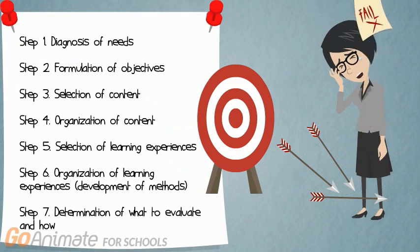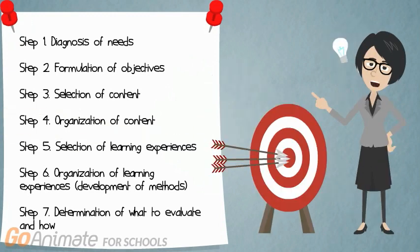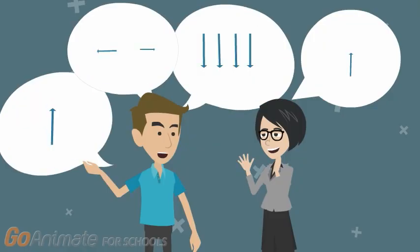Taba provided a grassroots rationale to create learning units. The main builders of these units will be supported so they do not fail. As creators, a sequence of tasks are followed. Taba's model adds the needs of children as teachers develop learning units by deconstructing standards, pacing learning targets, developing activities, and deciding on artifacts.